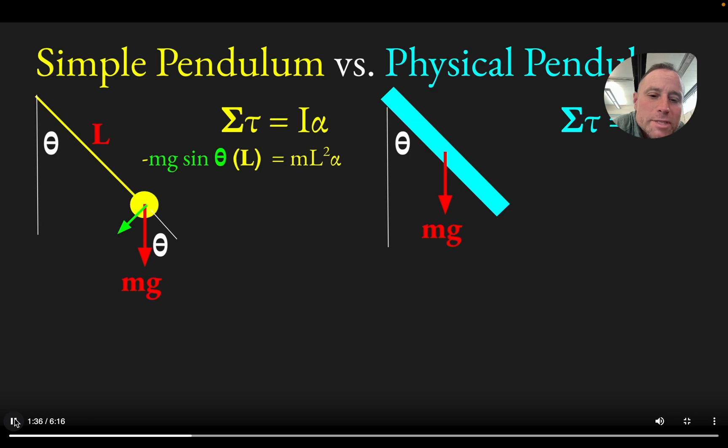Over on the physical pendulum side, you also would have mg acting, but now that mg is acting at the center of the stick, we'll assume it's a uniform stick. And so when you go to calculate the torque, it's important then that that weight is acting at only half the distance that it was acting on the simple pendulum.